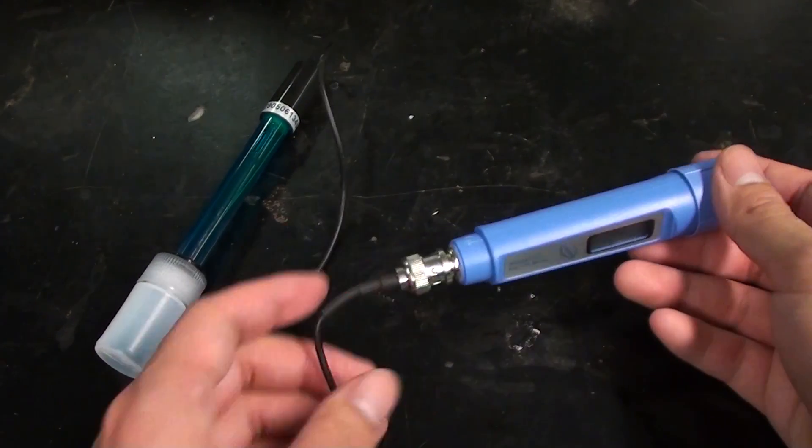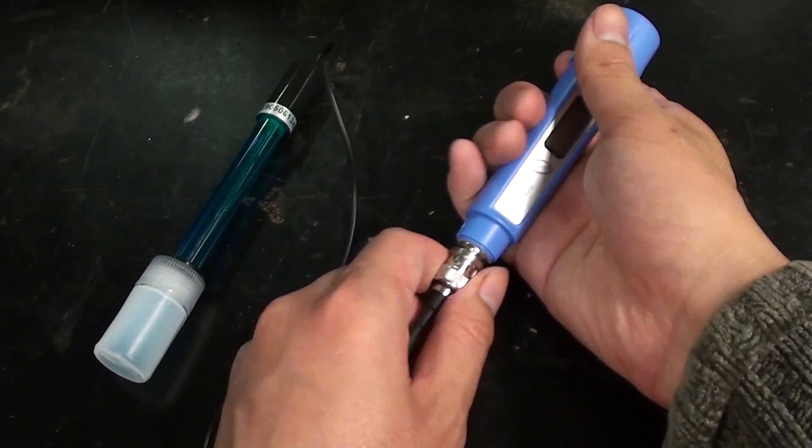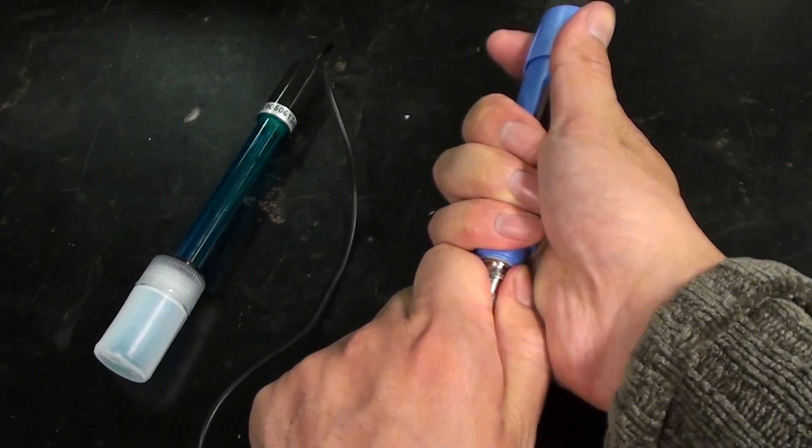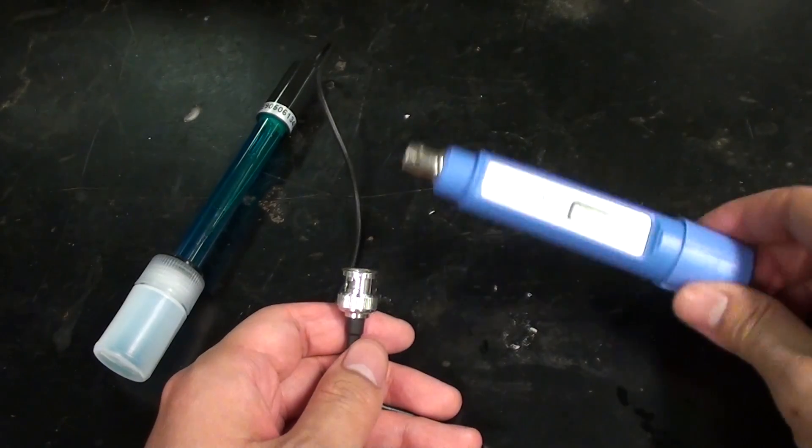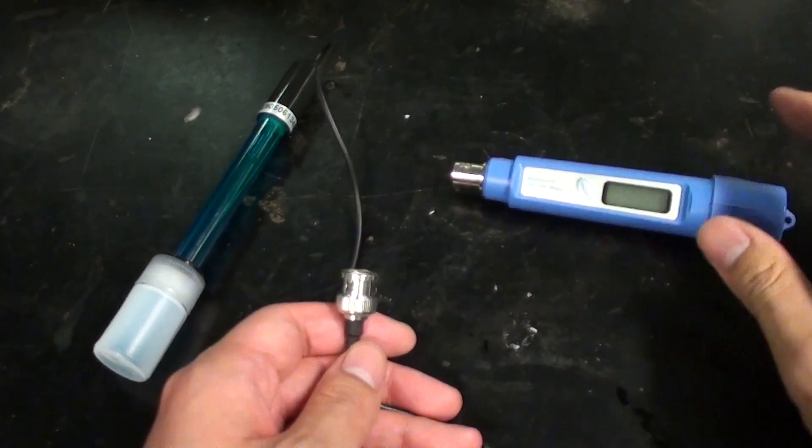But eventually you'll have to replace it. All pH electrodes are connected by a standardized BNC connector. Just disconnect the electrode and keep the meter. You can then connect another electrode to it.